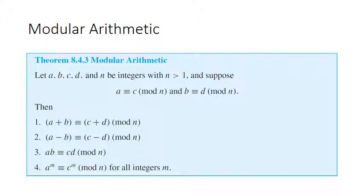Now let's talk about modular arithmetic — performing arithmetic modulo n. This is outlined in theorem 8.4.3. Let a, b, c, d, and n be integers with n greater than 1. Suppose we know that a is congruent to c mod n, and also that b is congruent to d mod n. Then we can say all four of the following things.